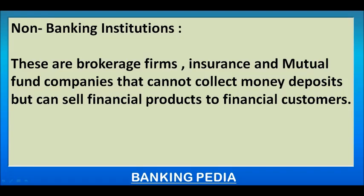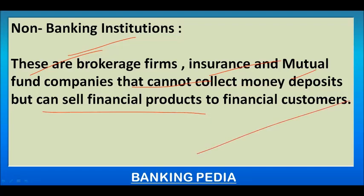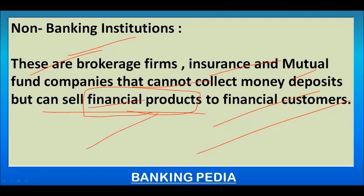Non-banking institutions include brokerage firms, insurance companies, and mutual fund companies. They cannot collect money from deposits, but they can sell financial products to financial customers. For example, SBI is a banking institution, but SBI Life Insurance is a non-banking institution — it cannot collect deposits but sells insurance schemes and financial products to customers.